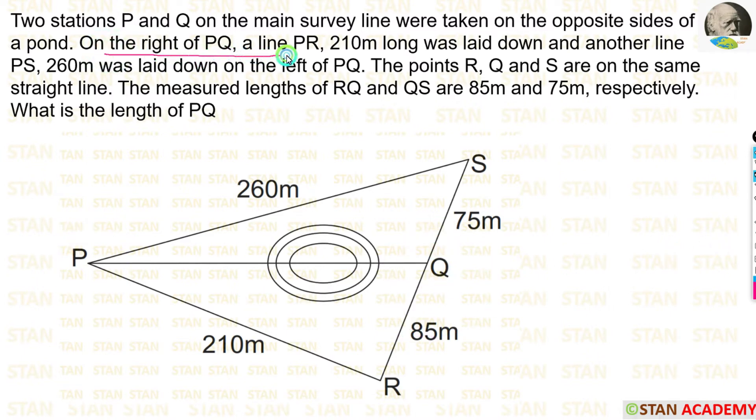On the right of PQ, a line PR, 210 meter long, was laid down. This is the PQ line. This is the left of PQ and this is the right of PQ. On the right side of PQ, a line is made, that is PR. It is having the length of 210 meter.